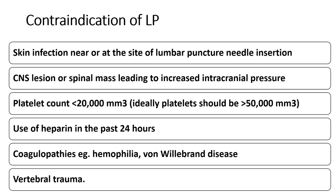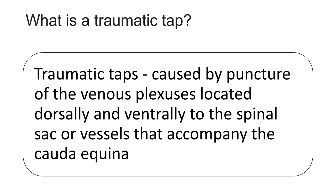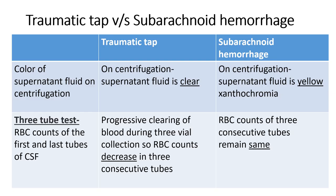Relative contraindications also include use of heparin in the last 24 hours, known coagulopathy such as hemophilia or von Willebrand disease, and vertebral trauma. Traumatic tap is caused by puncture of the venous plexus located dorsally or ventrally to the spinal sac, or vessels accompanying the cauda equina. Whenever you perform lumbar puncture and the CSF is blood-stained or red in color, it means either it is a traumatic tap or subarachnoid hemorrhage.